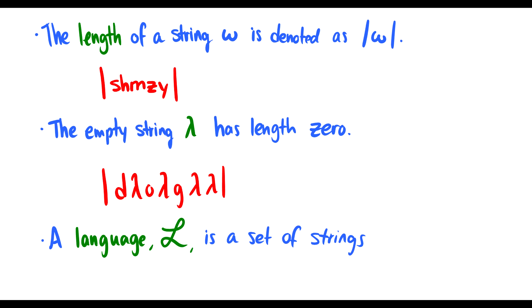There's a few properties of strings we should talk about. One is the length of a string, which we use these absolute value signs. This just means how many symbols are there in the string. If I take the string S-H-M-Z-Y, the length of that is going to be five, because there are five symbols in our string.